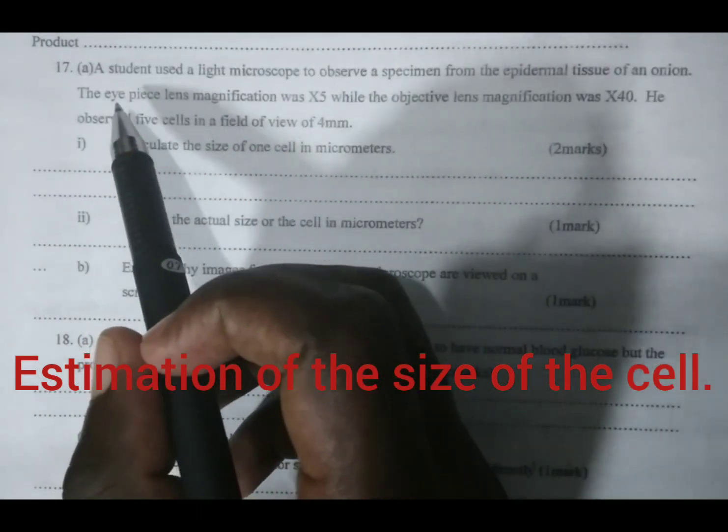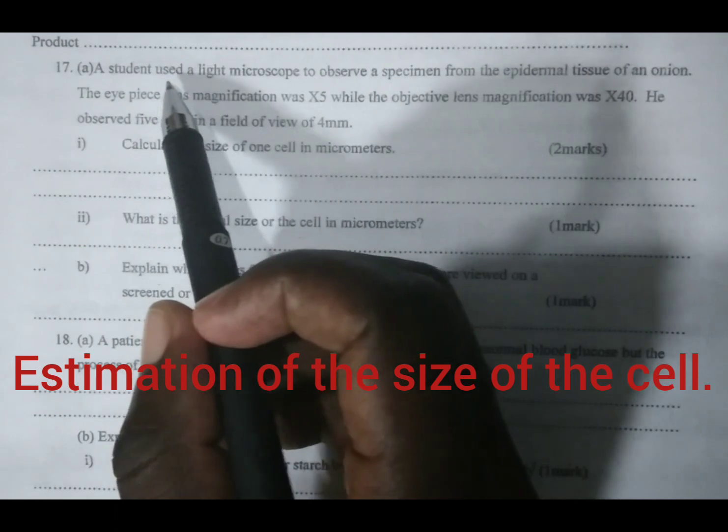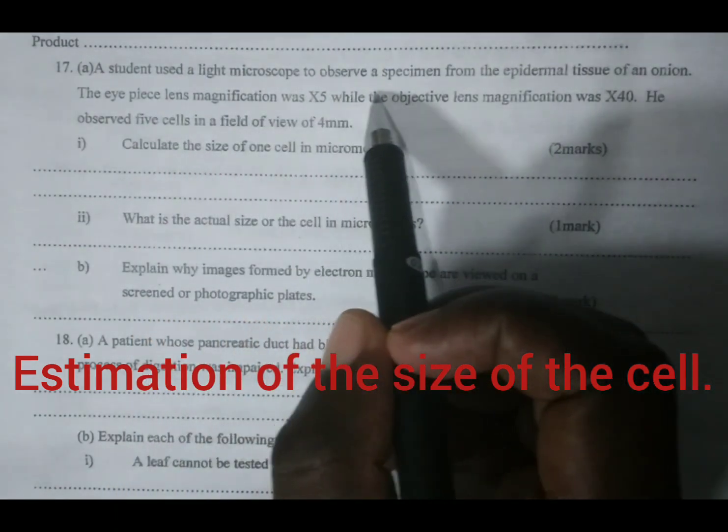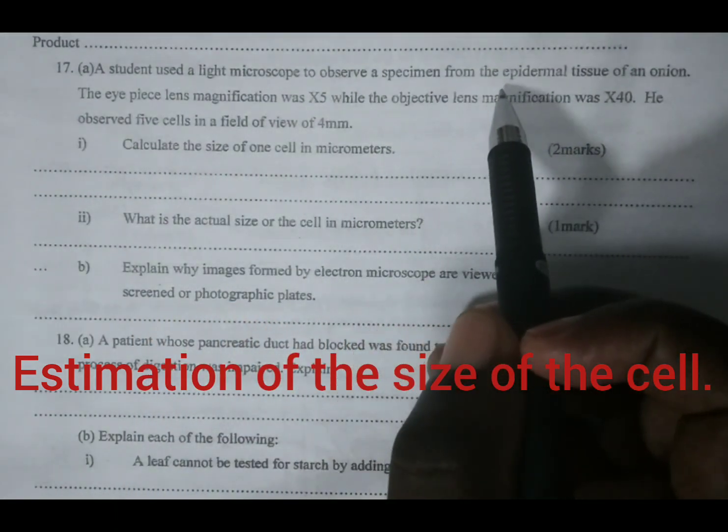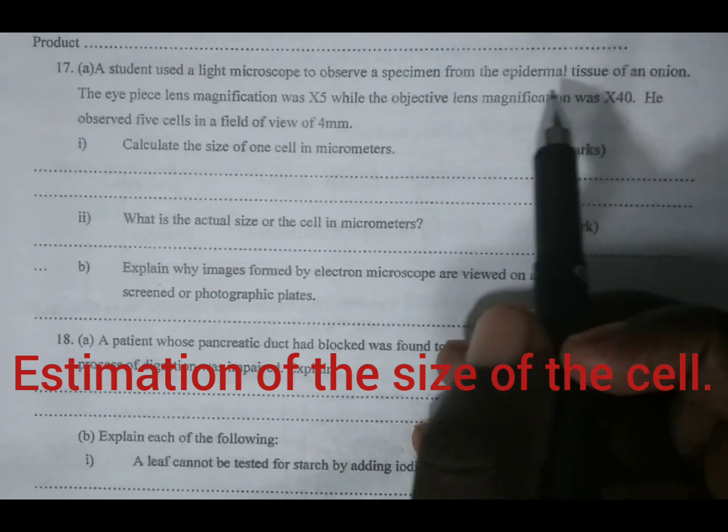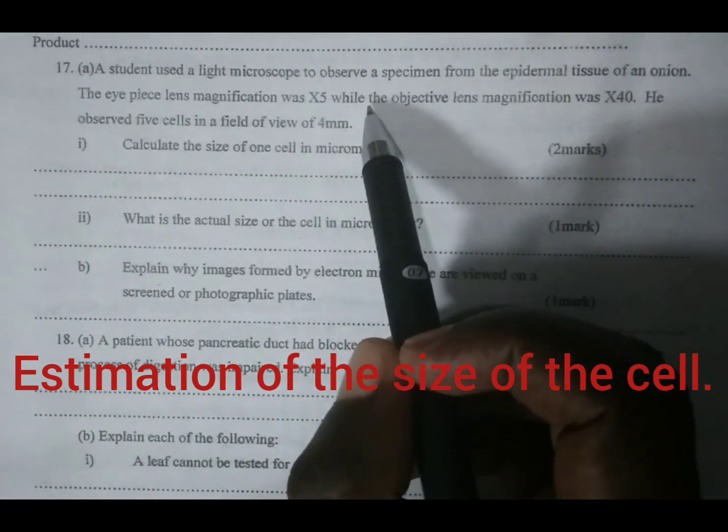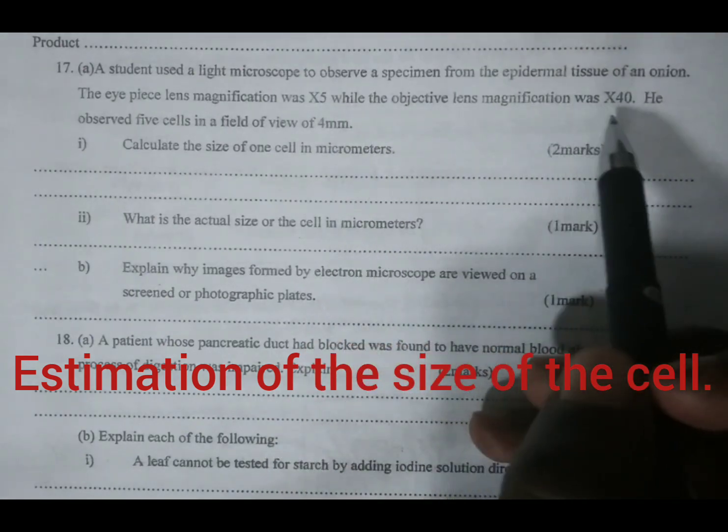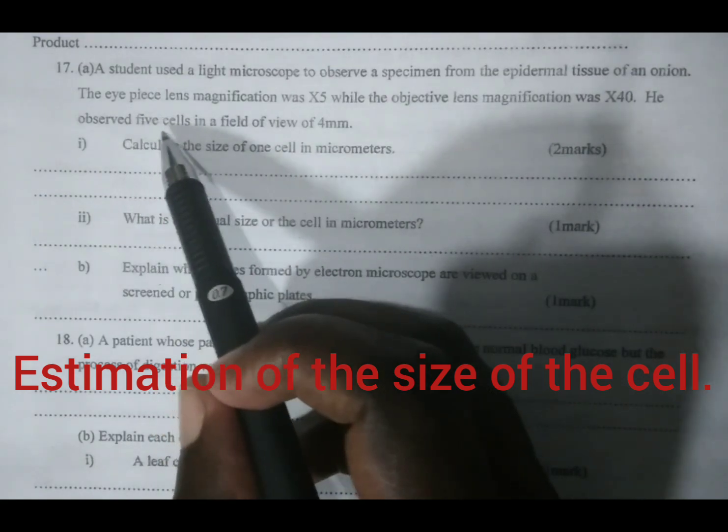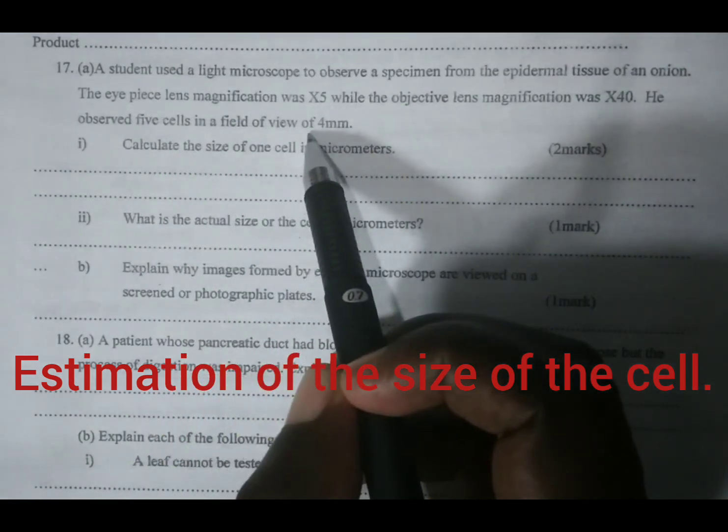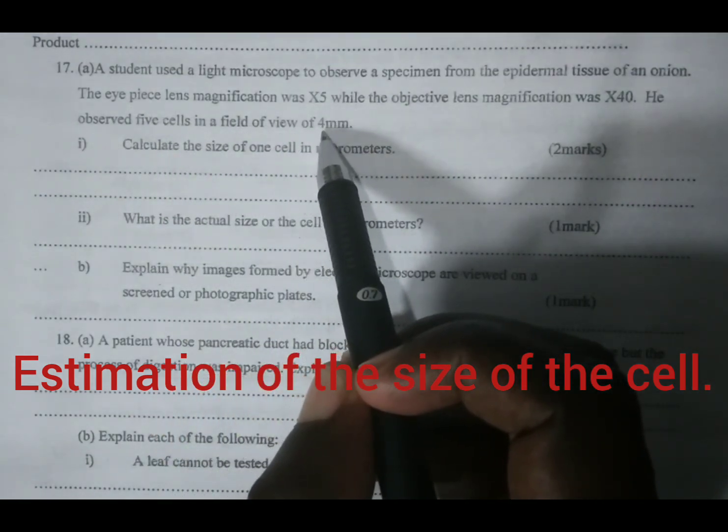And the question we have reads: a student used a light microscope to observe a specimen from the epidermal tissue of an onion. The eyepiece lens magnification was X5 while the objective lens magnification was X40. He observed five cells in the field of view of 4 millimeters.